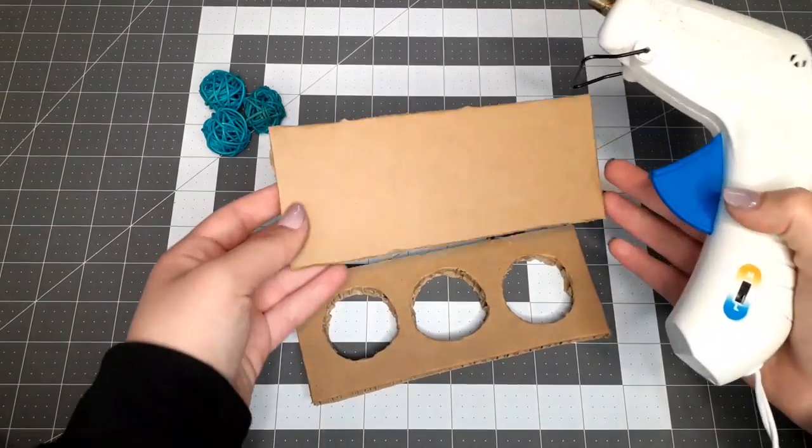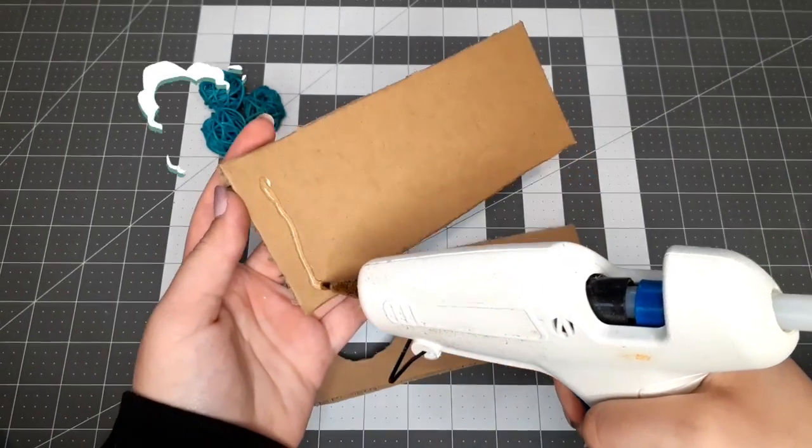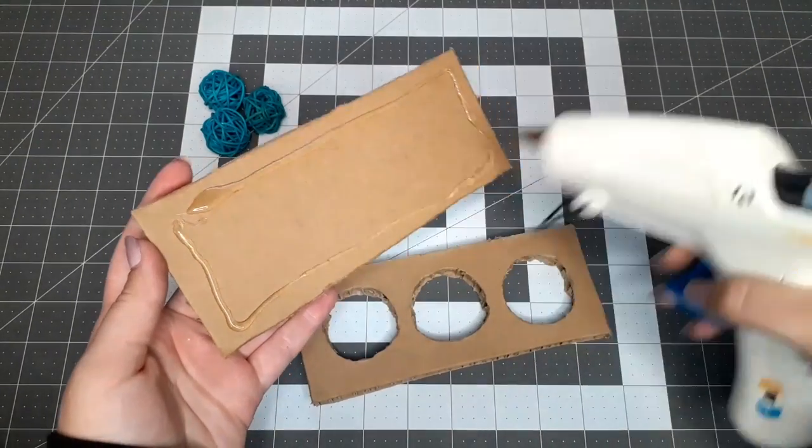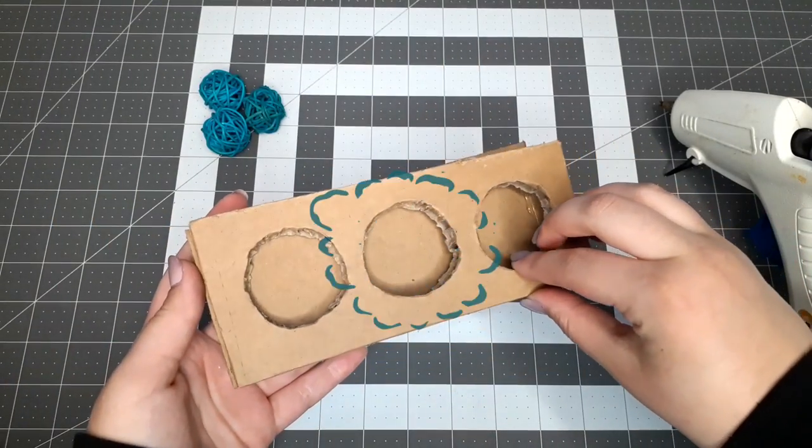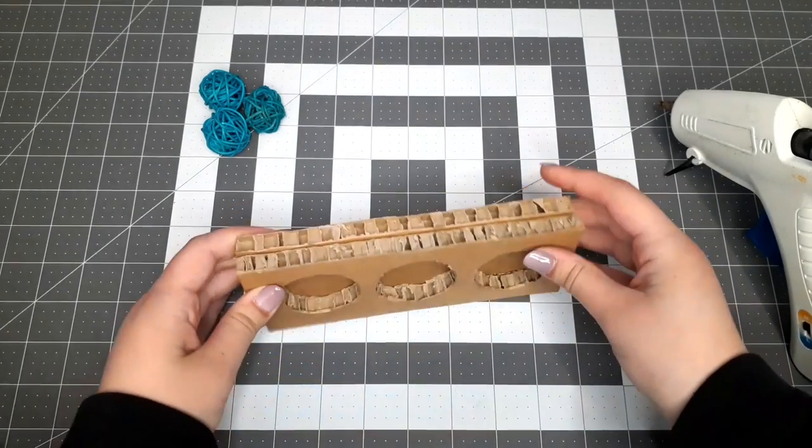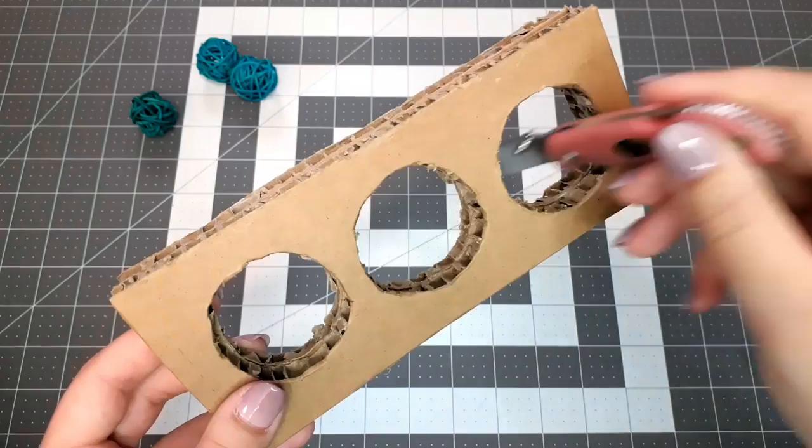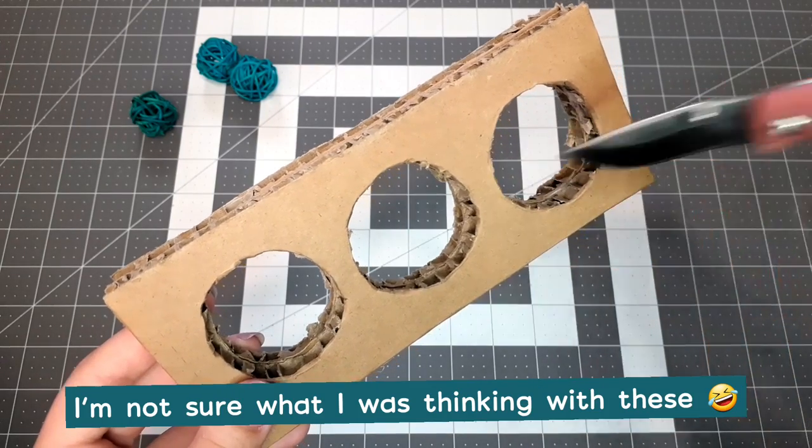Next, we're going to glue the other piece of thick cardboard onto the bottom of the cardboard with the holes. And we're going to cut the three circles out again onto the base layer of cardboard. Okay, honestly, this transition was a little better, but it's still pretty bad. I'm not sure what I was thinking with these.